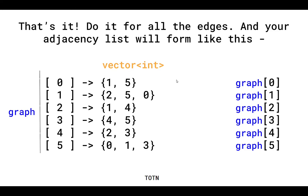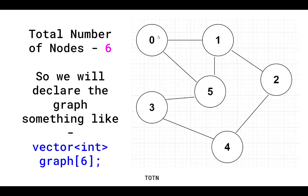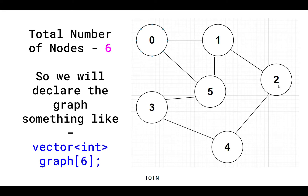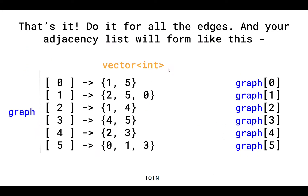After adding all edges, the adjacency list is formed. graph[0] contains neighbors 1 and 5. graph[1] contains 2, 5, and 0. graph[2], graph[3], graph[4], and graph[5] each contain their respective neighbor lists. Each graph[i] is a vector<int> storing all neighbors of vertex i. For example, graph[5] contains 1, 0, and 3, since those vertices are directly connected to 5.